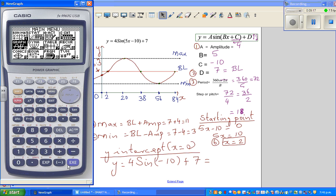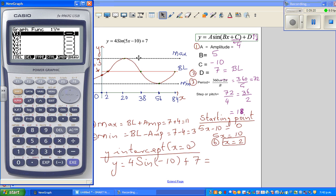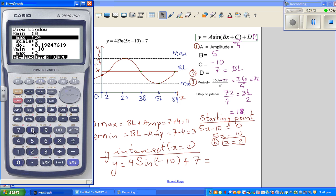So let us graph it now. Go to your graph menu and delete it. The equation was 4 sine bracket 5x minus 10 plus 7. And you need to look at your scale. I want from 0 to 84. Shift V window, 0 to 84, on a step of 18. And I want to go, the maximum was 11. So you can go up to 12, scale of 2, and then draw it.